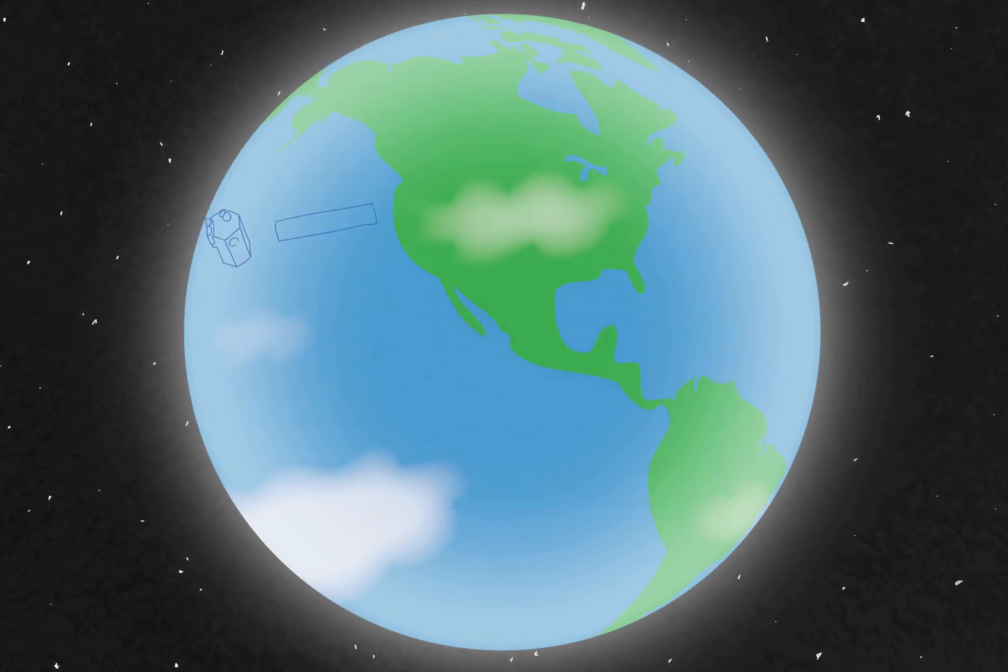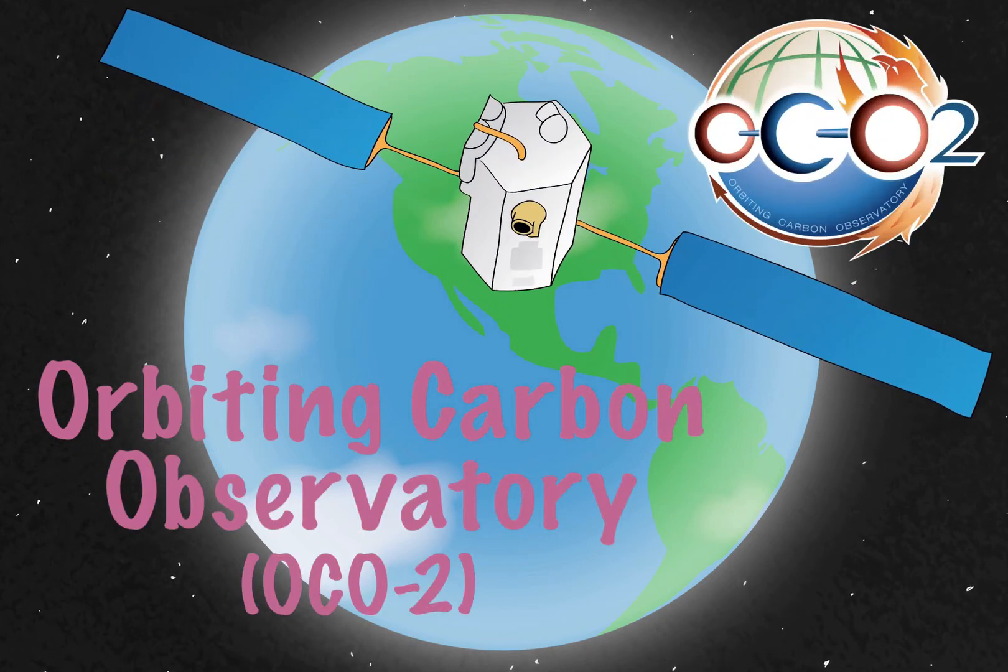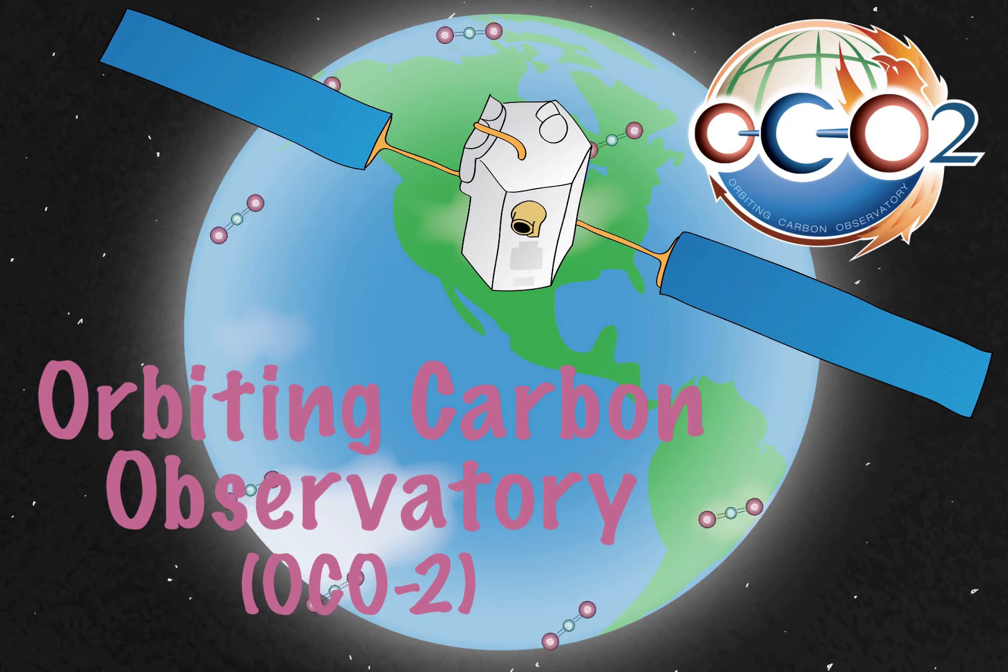That's where the OCO-2 mission, the Orbiting Carbon Observatory, comes in. NASA's first satellite designed specifically to measure the global distribution of atmospheric CO2 from space.